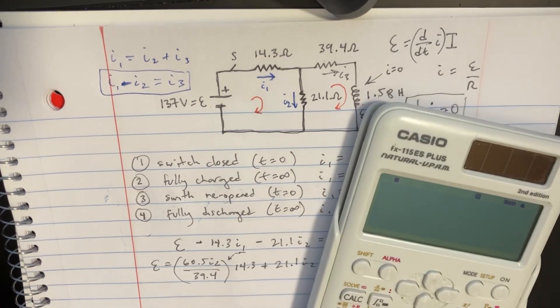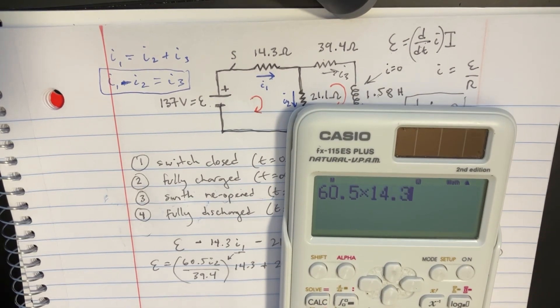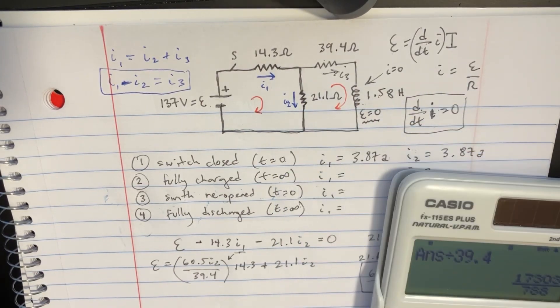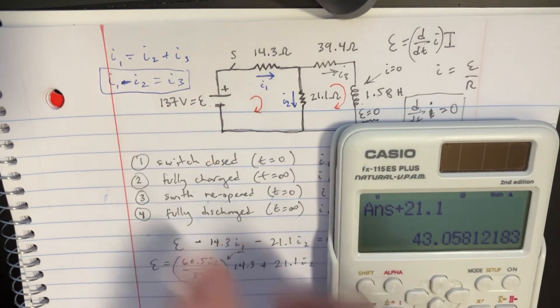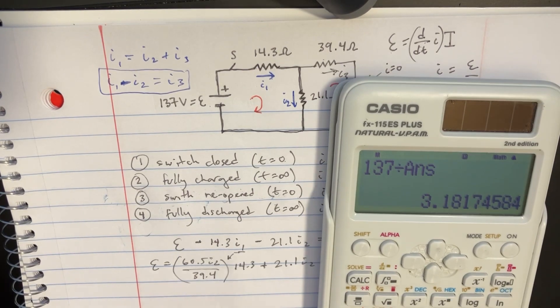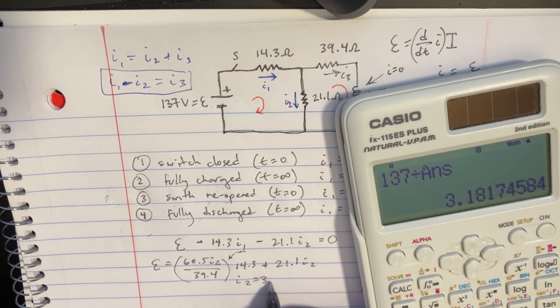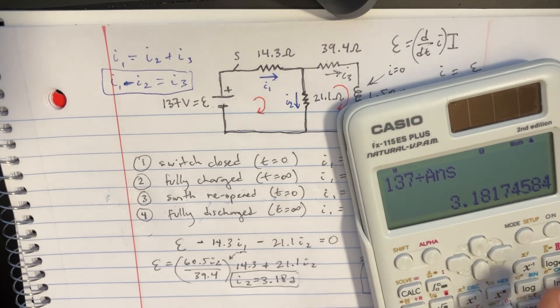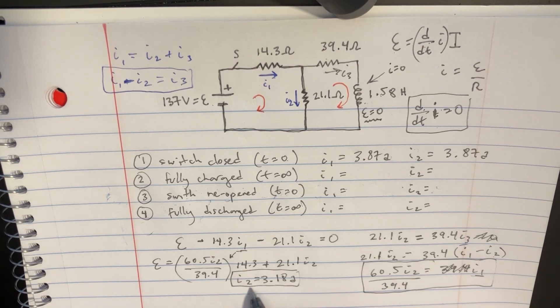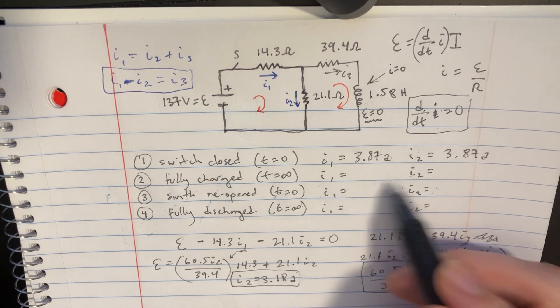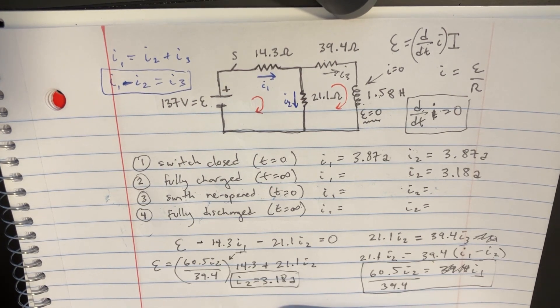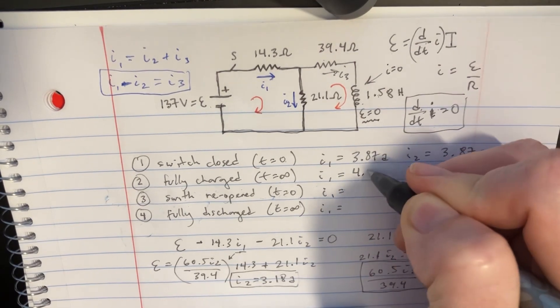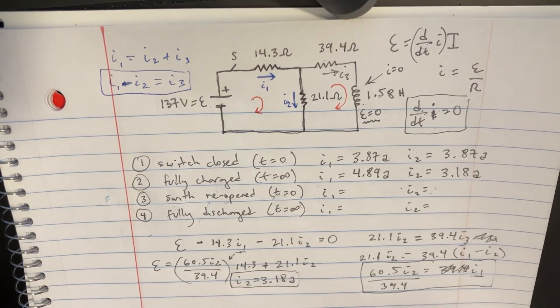So it'll be something more like 60.5 times 14.3 divided by 39.4, and I'll even add 21.1 to that. So I got all this. That's times I2. And what's the voltage there? It's 137 divided by whatever I got for the answer. So I'll find that I2 is equal to 3.18 amps. So that's going to help because now, I mean, that's the answer for I2, 3.18 amps. And we can basically just multiply that by 60.5 and divide that by 39.4, and that should give us I1, which is 4.89 or so. Okay, this is good.